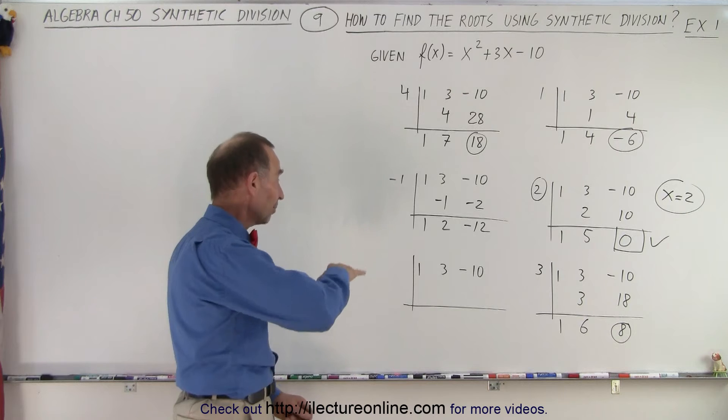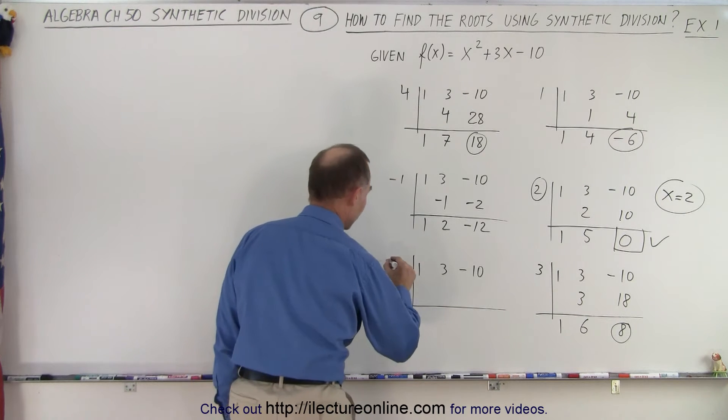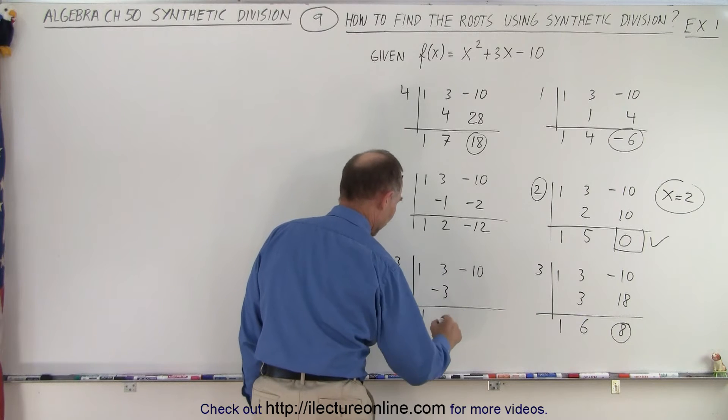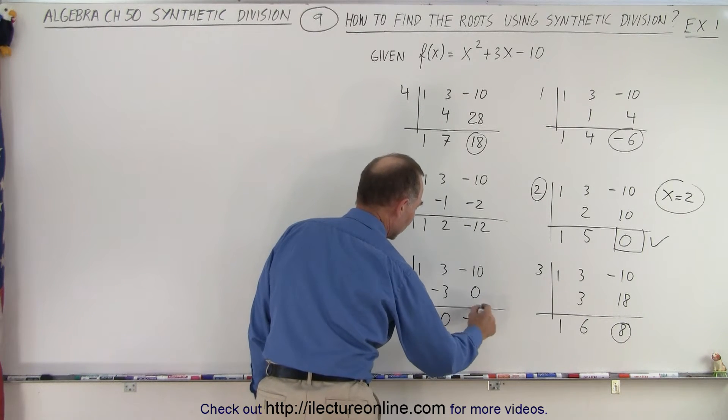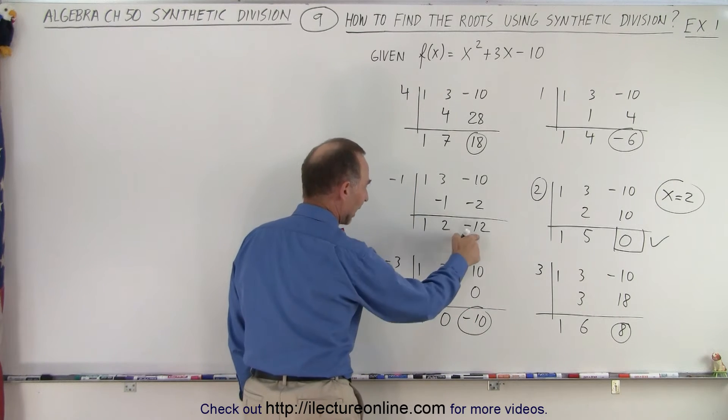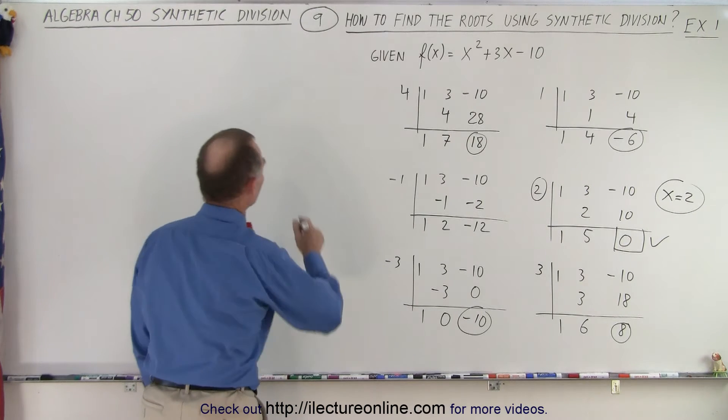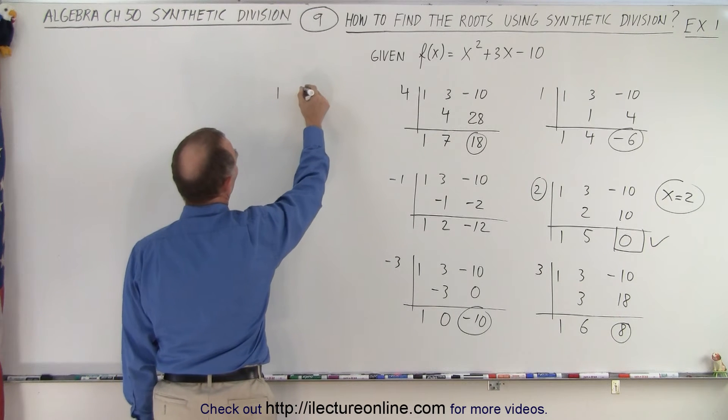How about negative 3? I'll jump past negative 2. I'll try negative 3. Drop down the 1. Negative 3 times this is negative 3. Add them together, I get 0. Negative 3 times 0 is 0. Negative 10. Again, notice by going from negative 1 to negative 3, I got closer to 0. So it looks like I'm going in the right direction. So I need maybe try a few more.